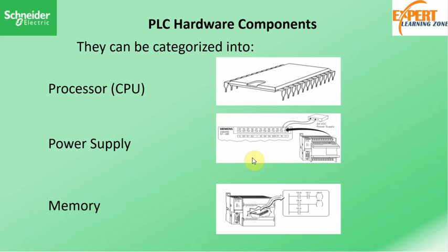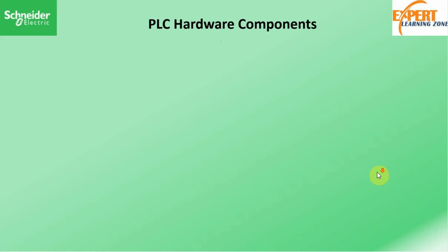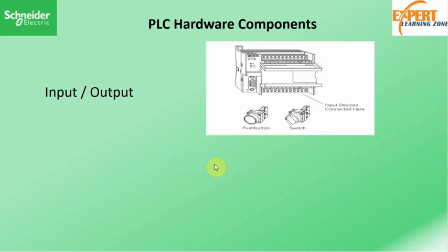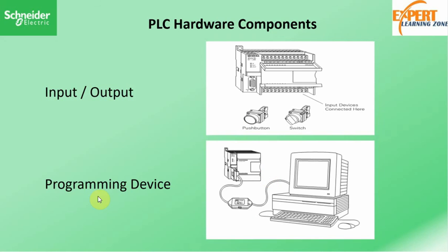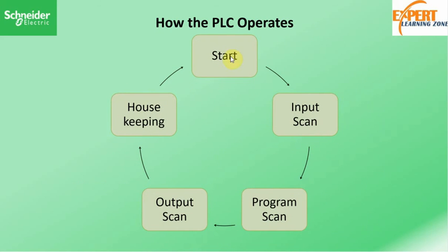Then we have memory — the memory is where the program is loaded before it is executed by the CPU. We have to store the program somewhere in the hardware for it to be accessed by the CPU for execution, and we do that with the help of the memory units. The next component is the input/output unit, which is responsible for relating our PLC to the outside world. We get external information through the input and send information to the outside world through the output. Finally, we have the programming station, where we build the software logic to transfer into the CPU of the PLC for execution.